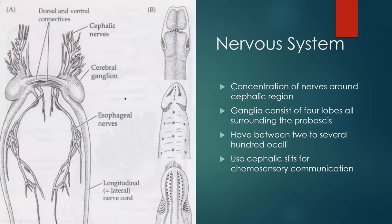Nemerteans have a very simple nervous system. Being cephalic, there is a clear concentration of nervous tissue around the head region, with a large ganglia consisting of four lobes all surrounding the animal's proboscis. Unlike most other invertebrates, they position their ganglia around the proboscis rather than the stomach region. They can have anywhere from two to several hundred ocelli, and they mostly communicate through chemosensory signals via highly specialized cephalic slits with lots of nerve tissue, which also aids in reproduction.